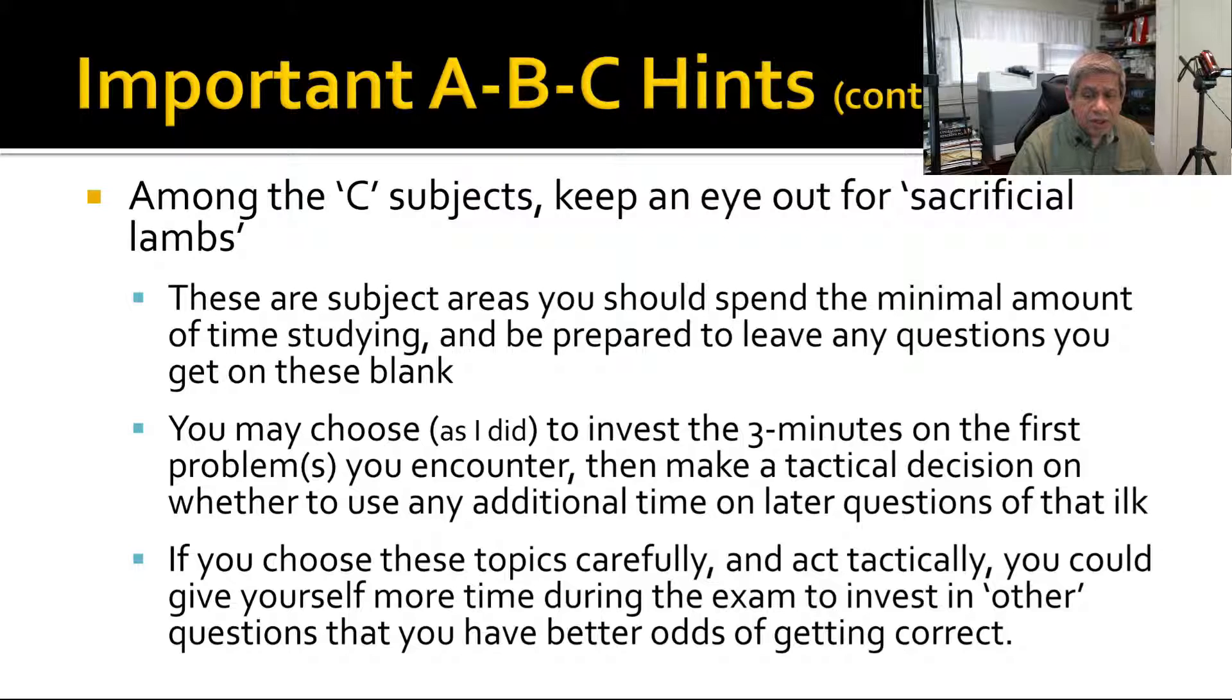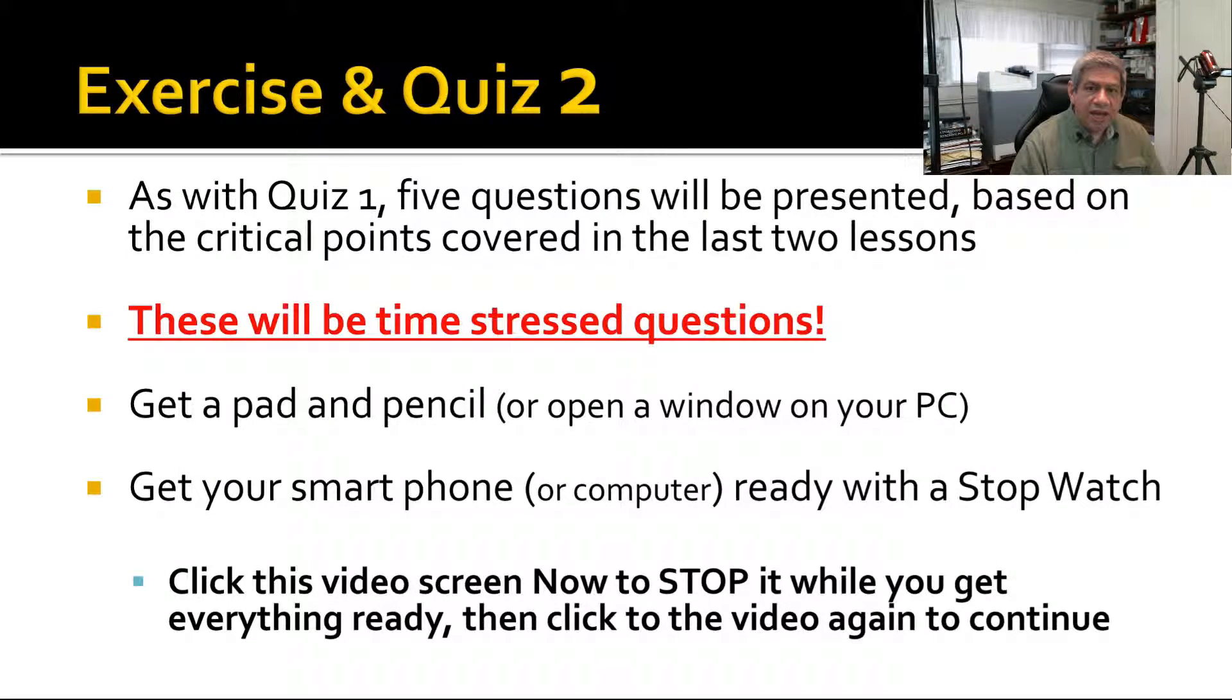You may choose, as I did, however, to invest an initial three minutes. If you choose the topics for your A, B, and C carefully, and then you act tactically like I did, you could give yourself more time during the exam, which is the important time to invest in other questions that you have a better chance of getting correct. I probably saved a half an hour by skipping—there were a lot of Laplace and Fourier transform questions on my test, probably ten or eleven. I saved at least a half an hour by skipping those and was able to spend that time better with other questions.